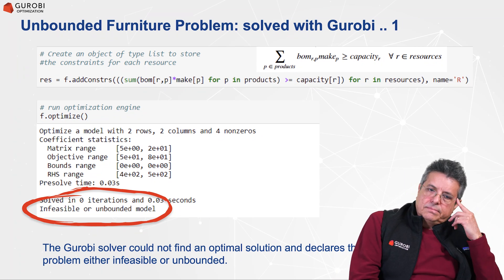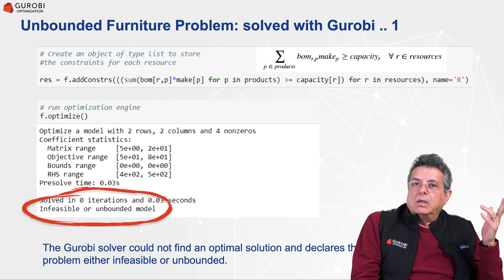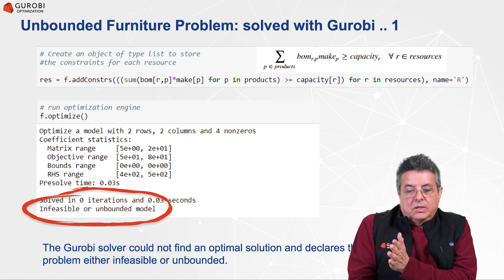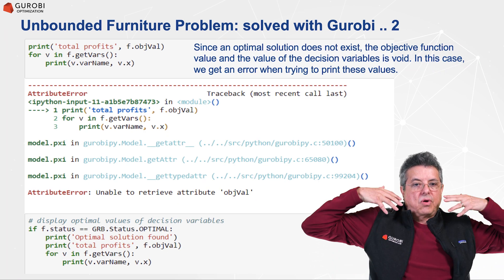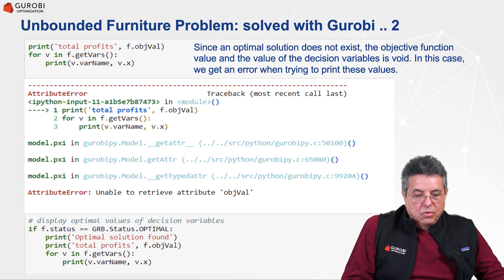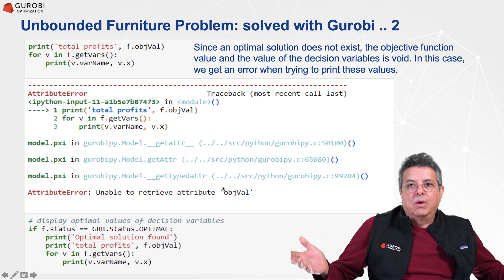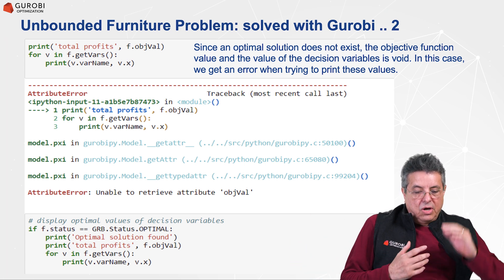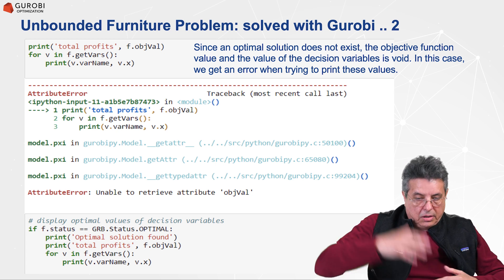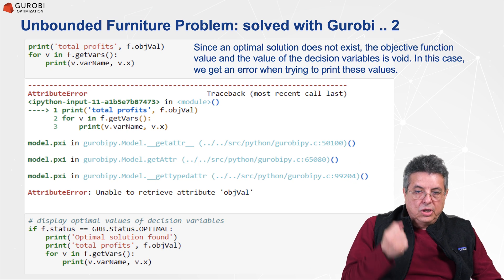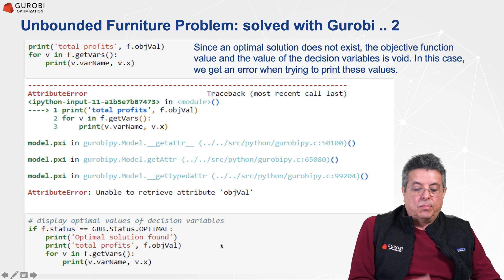Gurobi says it couldn't find an optimal solution — either the problem is infeasible or unbounded. When Gurobi tries to print the optimal solution, it generates an error because there is no optimal solution. So when a problem has no solution or the solution is unbounded, you need to check for an optimal solution before printing. For this purpose, you can check the status of the optimization with the argument GRB.status.optimal.